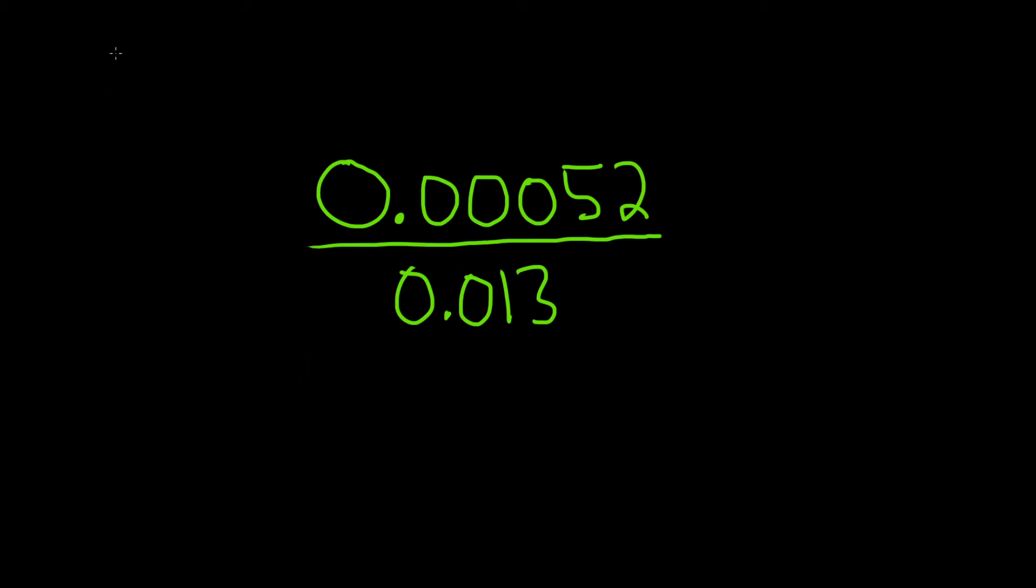So we'll start with the numerator. I'm going to write it up here on the top left. So 0.00052. And the goal is to write this in scientific notation in a way that will let us simplify. So I'm thinking it would be really nice if we had a 52 upstairs and a 13 downstairs, because 52 over 13 is 4.